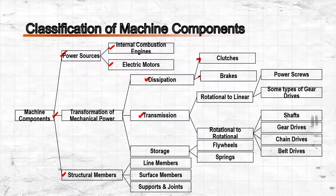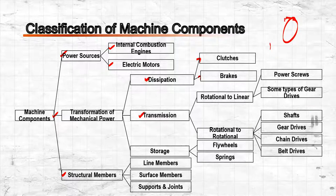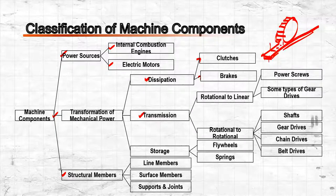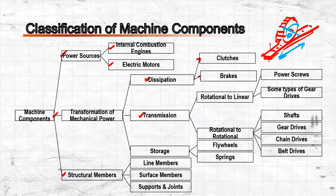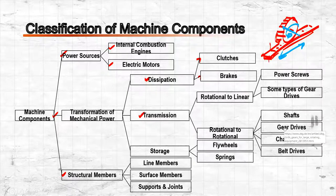Components with rotational-to-rotational motion include gear drives, chain drives, and belt drives. In a gear drive, there is a large gear and a smaller gear called the pinion — the term 'pinion' refers to the smallest gear in the assembly. Gear assemblies also include gear reducers, shaft couplings, and bearings.